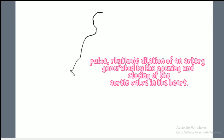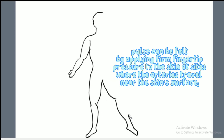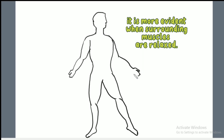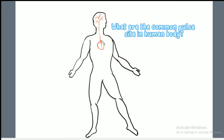What is pulse? Pulse is the rhythmic dilation of an artery generated by the opening and closing of the aortic valve in the heart. Pulse can be felt by applying firm fingertip pressure to the skin at sites where the arteries travel near the skin surface. It is more evident when surrounding muscles are relaxed. Arterial pulses can be examined at various sites around the body through systematic palpation.